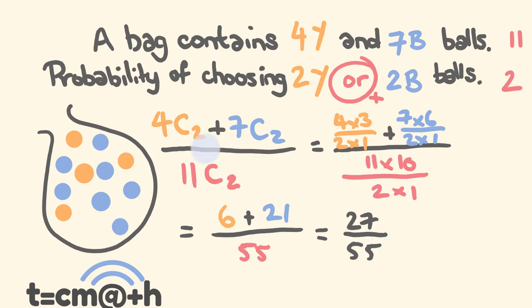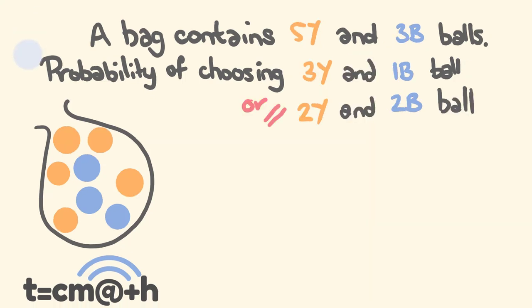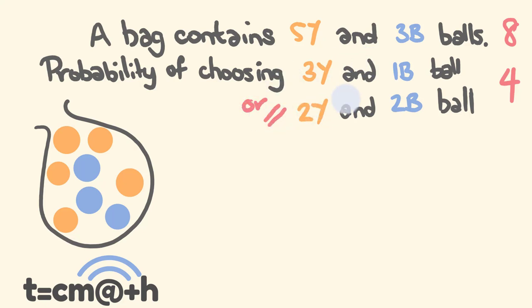That's a nice handy little trick. Now I'm going to give you one more question, and this one is going to be harder because we're going to combine these ideas. We have a bag containing five yellow and three blue balls — eight balls total — and we're choosing four. We want the probability of choosing either three yellow and one blue, or two yellow and two blue balls.